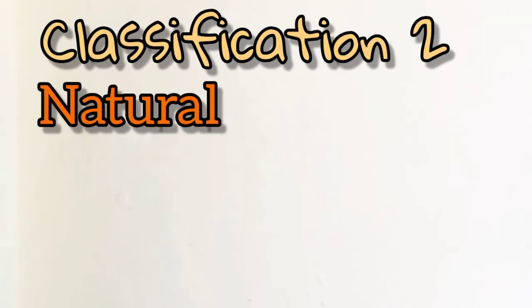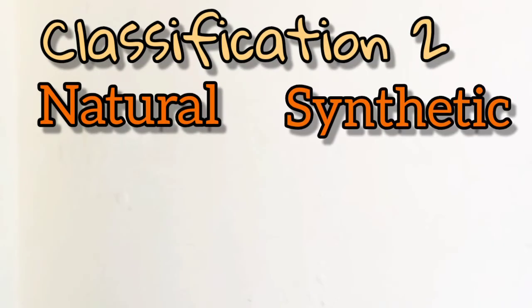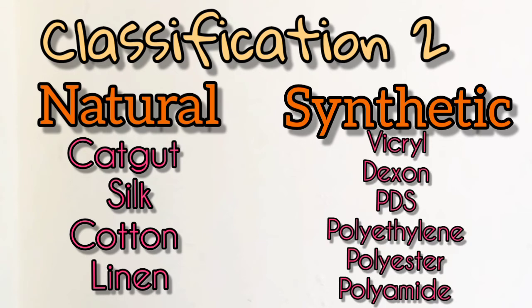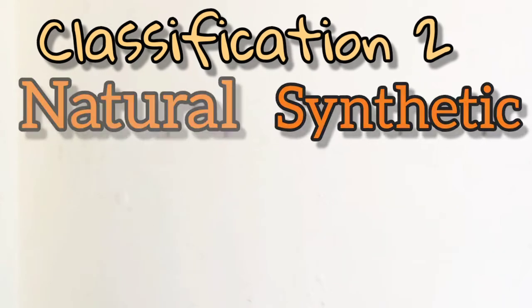Classification 2 is natural and synthetic. Natural suture materials are catgut, silk, cotton, linen, etc. Synthetic suture materials are vicryl, dexon, PDS, polyethylene, polyester, polyamide, etc.